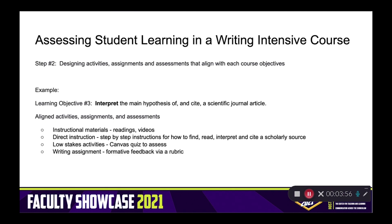So we created aligned activities, assignments, and assessments to support this specific learning objective. We chose some new instructional materials, including readings and videos. We added in direct instruction specific to how to find, read, interpret, and cite scholarly sources. We incorporated low-stakes activities like Canvas quizzes, and we created new rubrics for writing assignments to assess this learning objective.